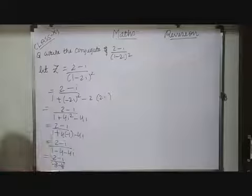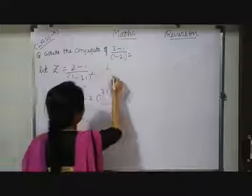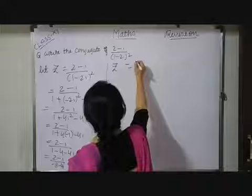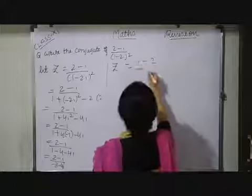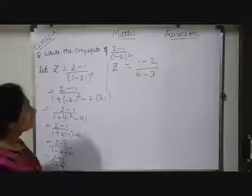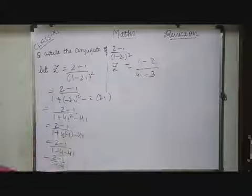From a numerator and denominator I can take out minus sign. So, z equals to take out minus sign that I can cancel out it. So, i minus 2 upon 4i minus 3. So, it will be 4i minus 3.